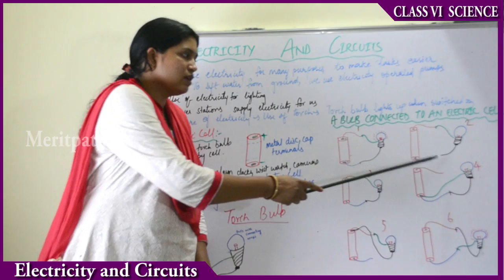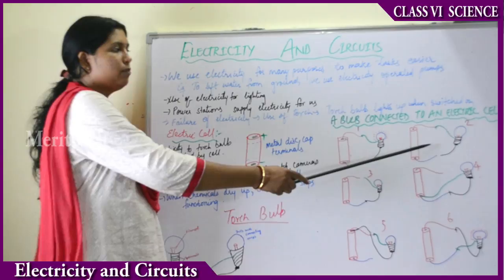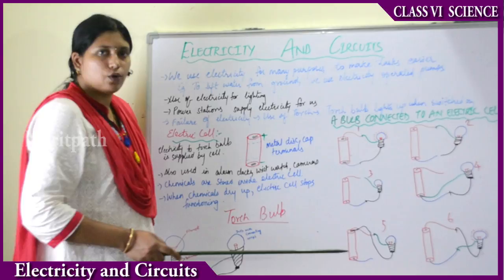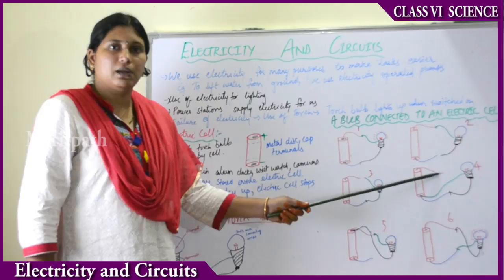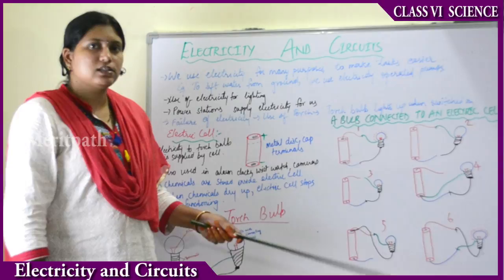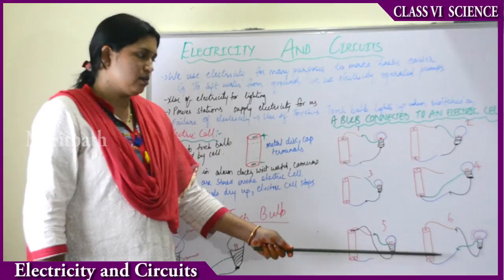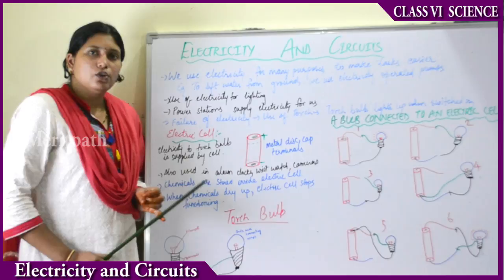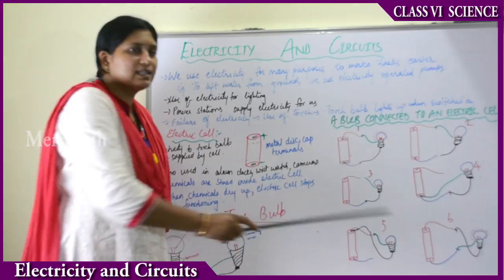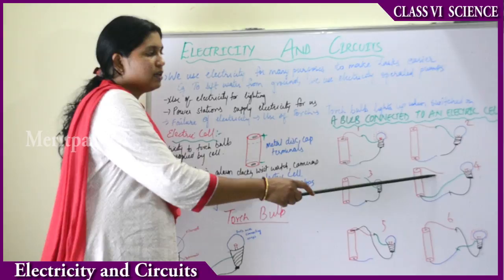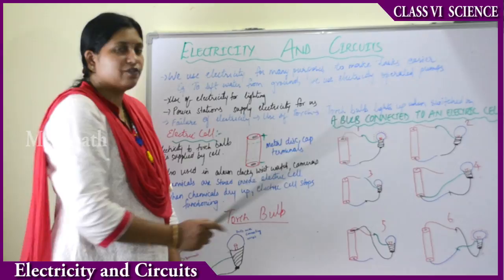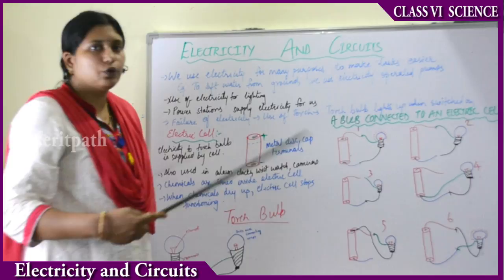In situation two, there is no connection between the wires, so the bulb does not glow. In situation three, there is no wire connection, so the bulb does not glow. In situation four, there is no connection from the positive terminal of the battery, so the bulb doesn't glow. In situation five, there is no connection from the negative terminal. In situation six, there is again a proper connection between both terminals of the cell and the bulb, so the bulb glows. Only in situations one and six does the bulb glow.